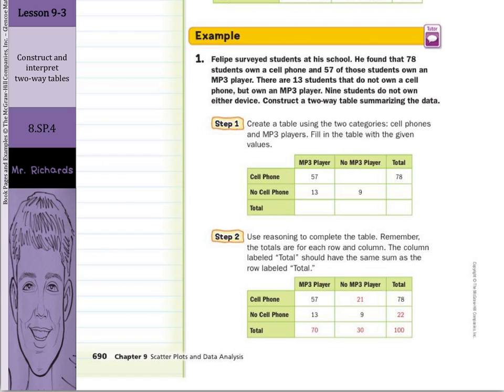Use reasoning to complete the table. Remember, the totals are for each row and column. The column labeled total should have the same sum as the row labeled total. The first place I would look is here. I know there's 78 total. 57 are here. So 78 minus the 57 gets me this 21. Then for the no cell phone, I know there's 13 and 9. So 13 plus 9 is 22.